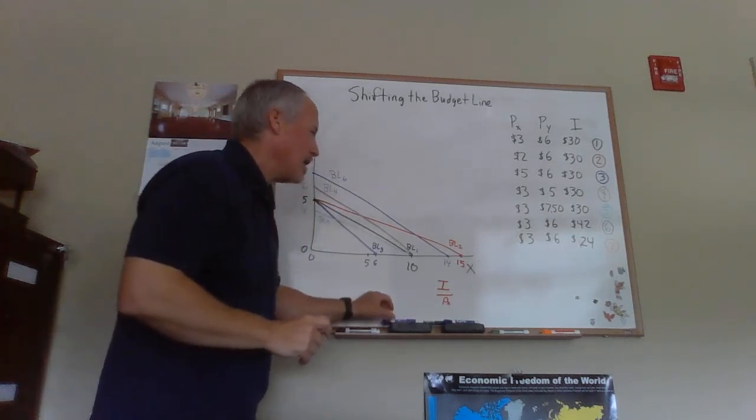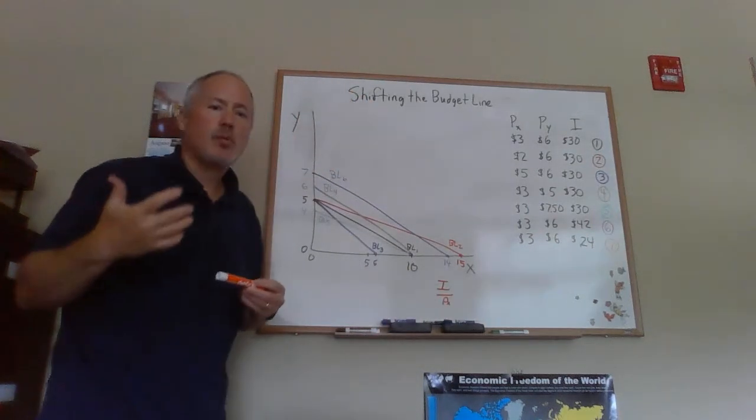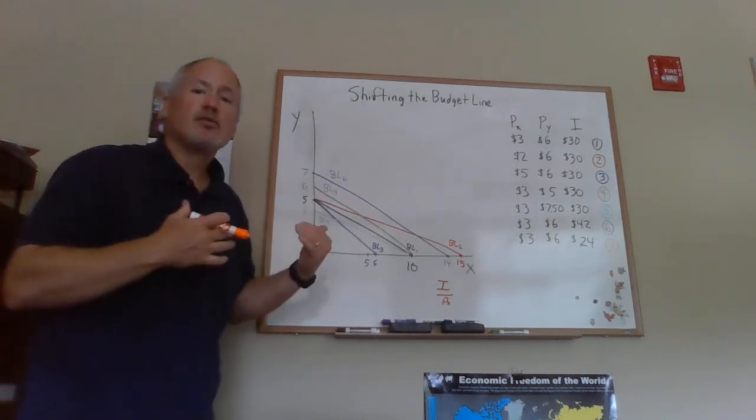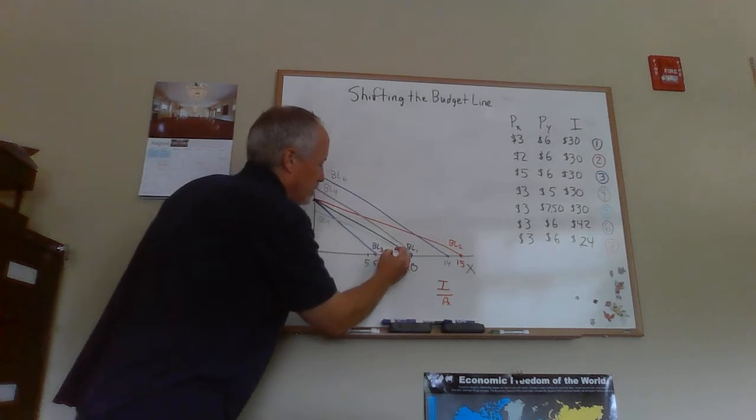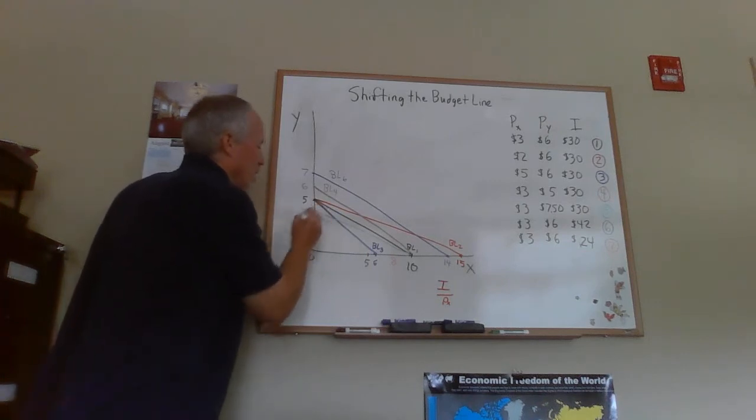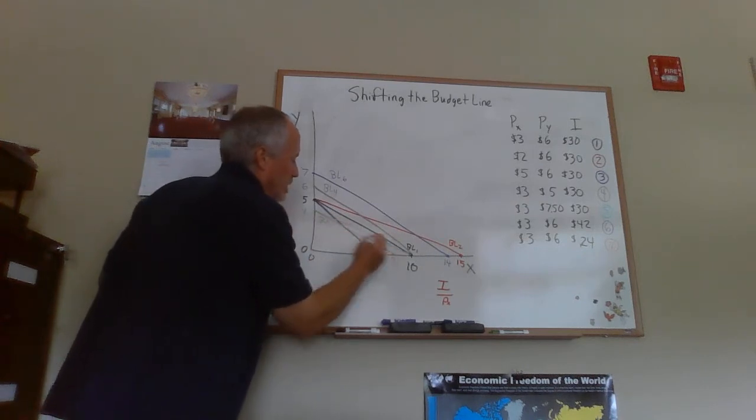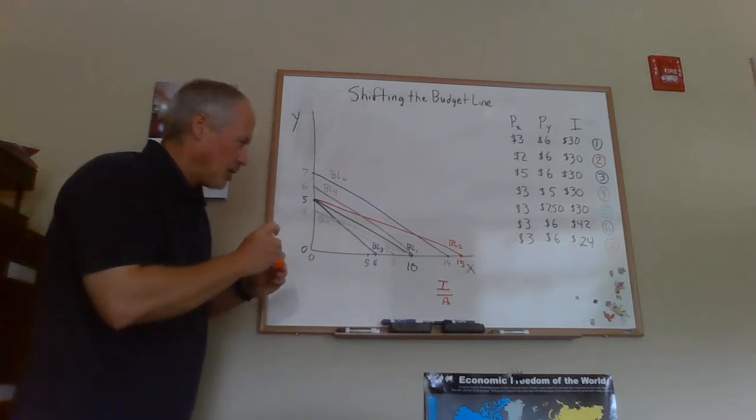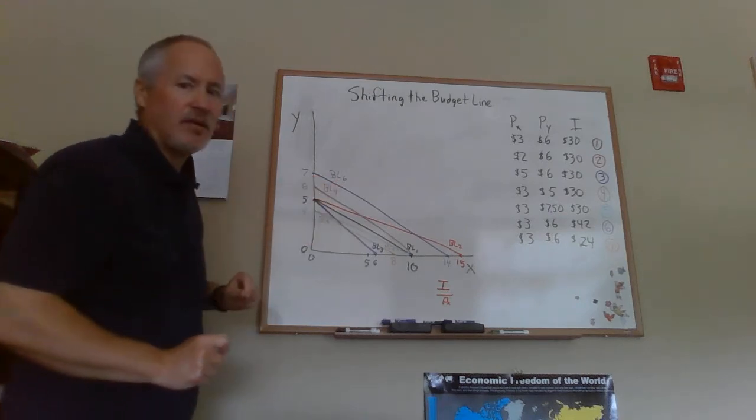Finally, we have a price of X of 3, a price of Y of 6, income of $24. The income has fallen. So for BL7, 24 divided by 3 is going to be 8, and 24 divided by 6 is going to give us 4. So now what we have here is BL1, our original one, BL6 and BL7.